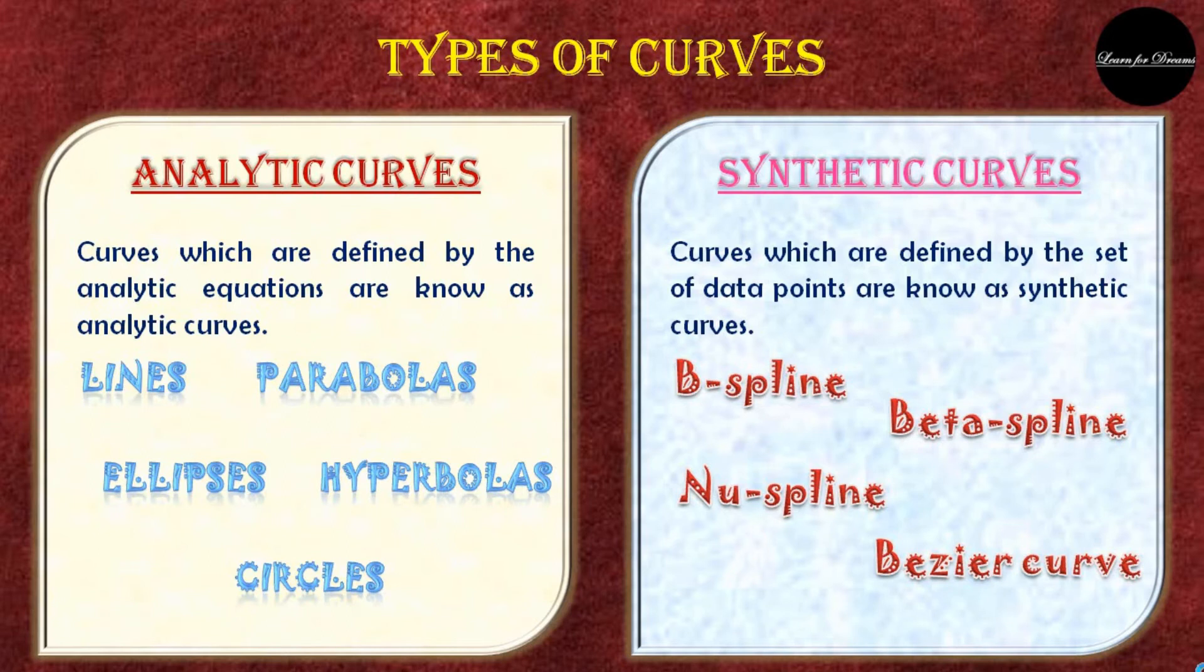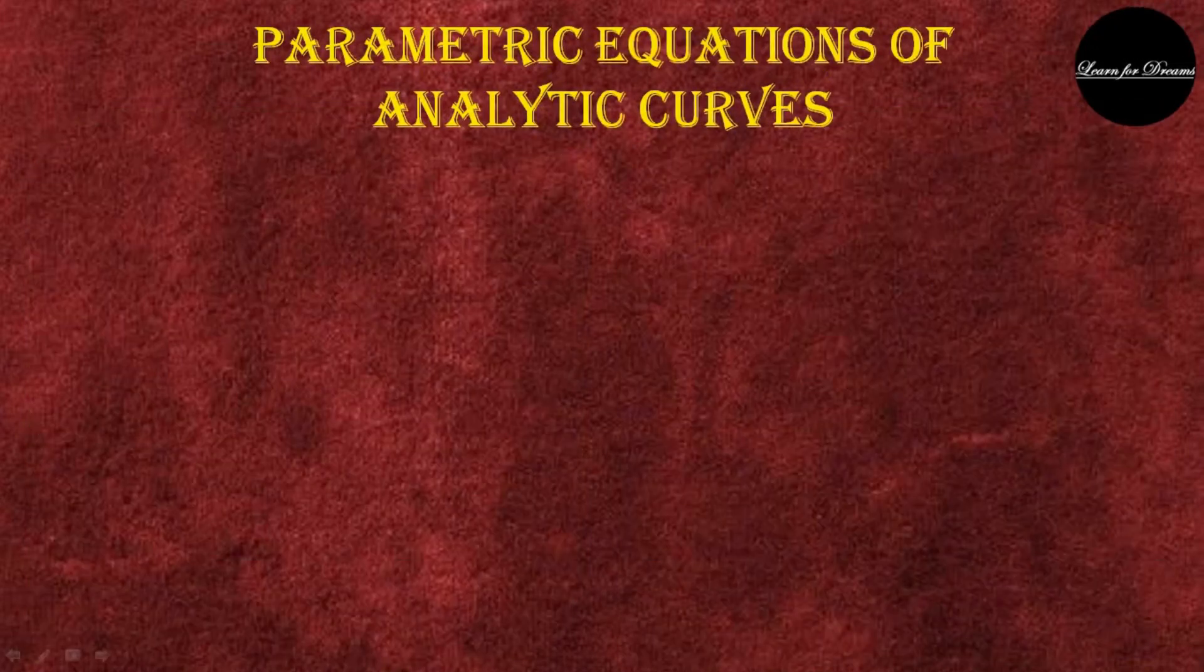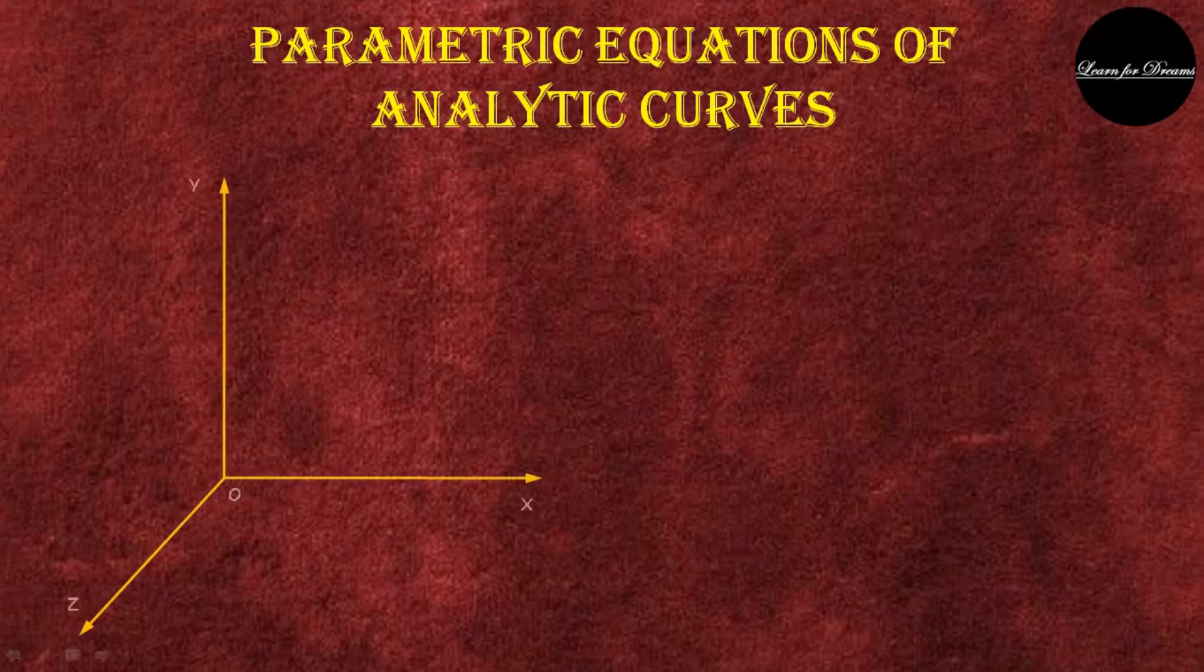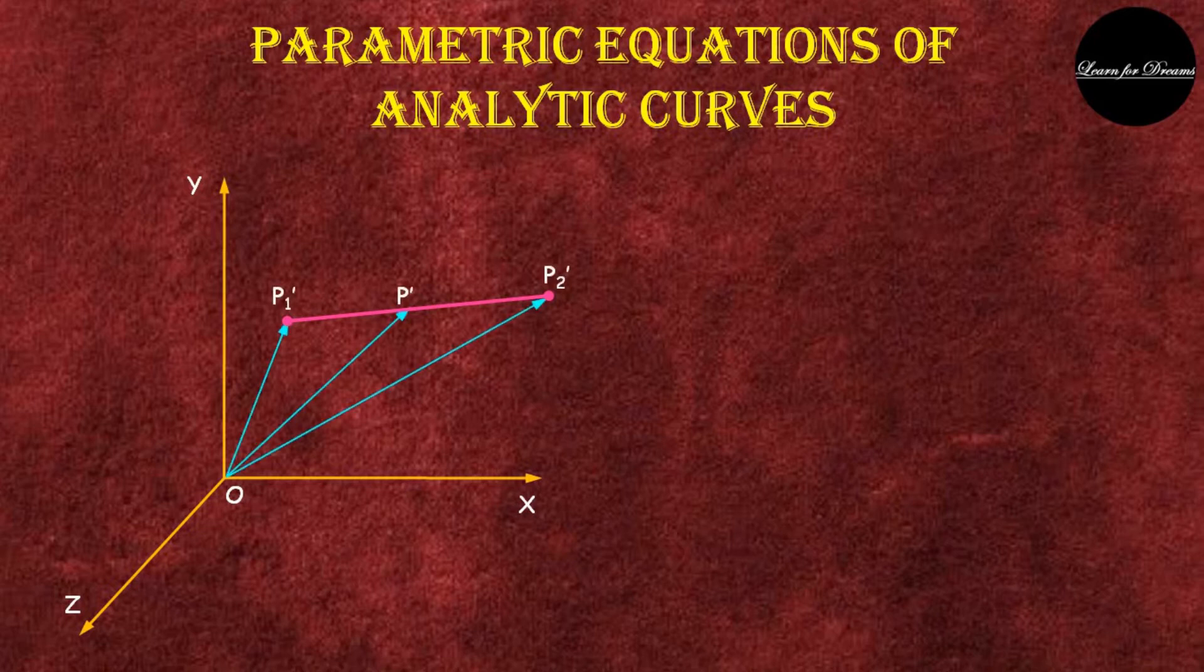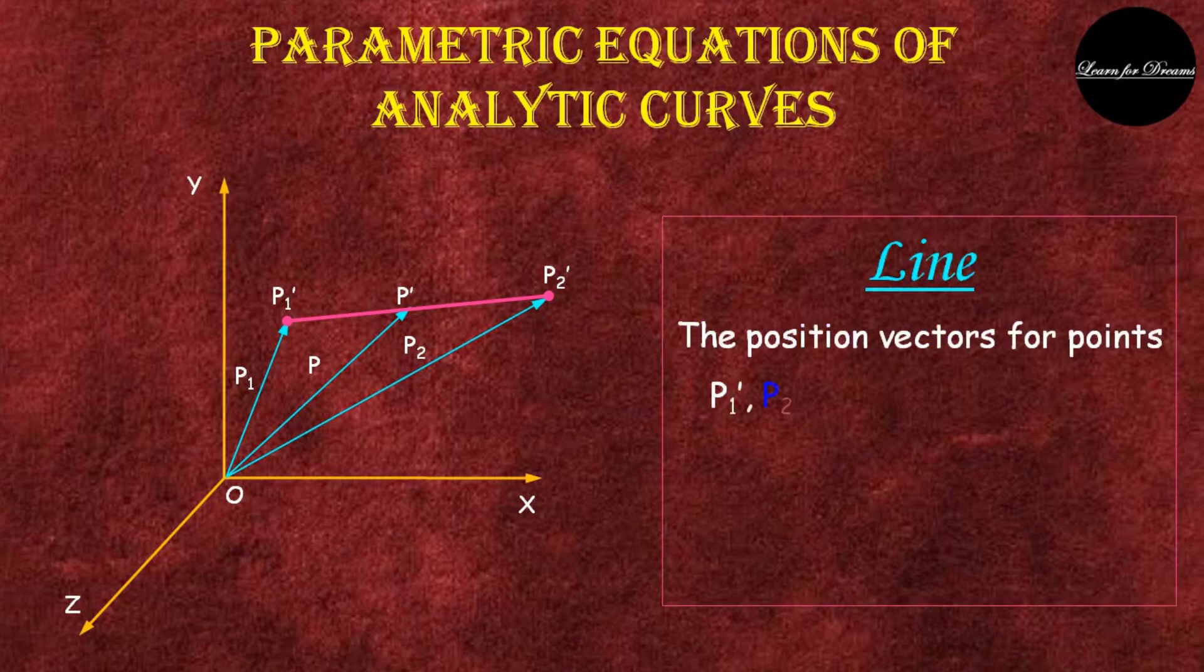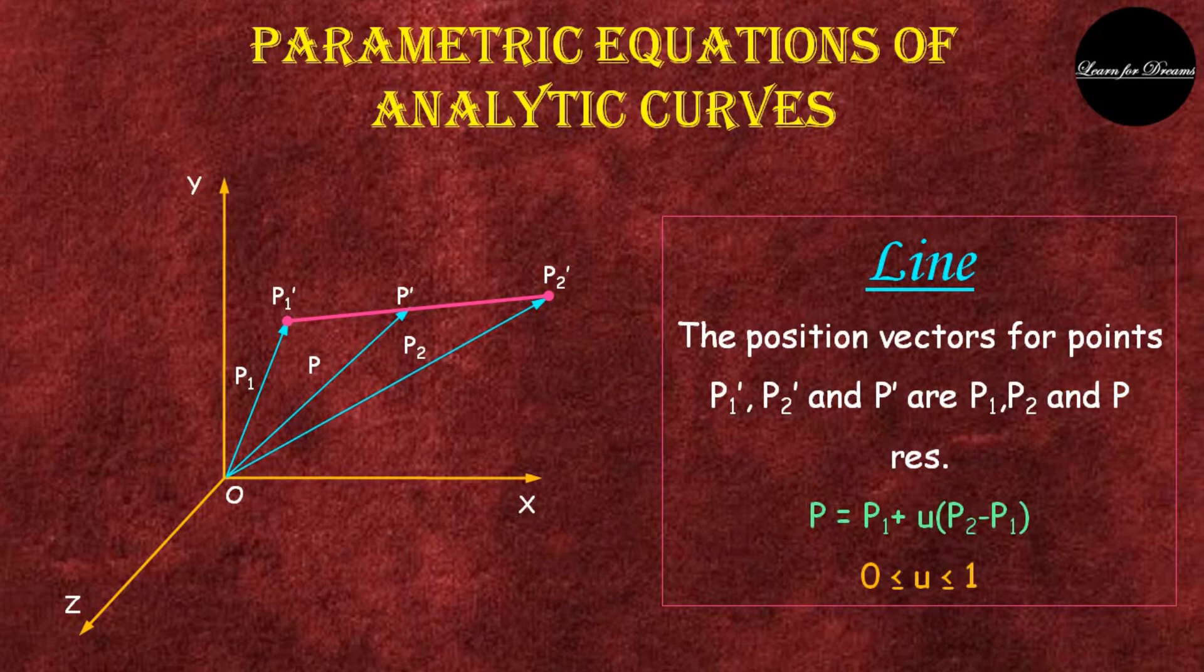Now let's see parametric equations of analytic curves, starting with the line. This is a line p1 dash p2 dash in xy plane. These are three position vectors p1, p, and p2.